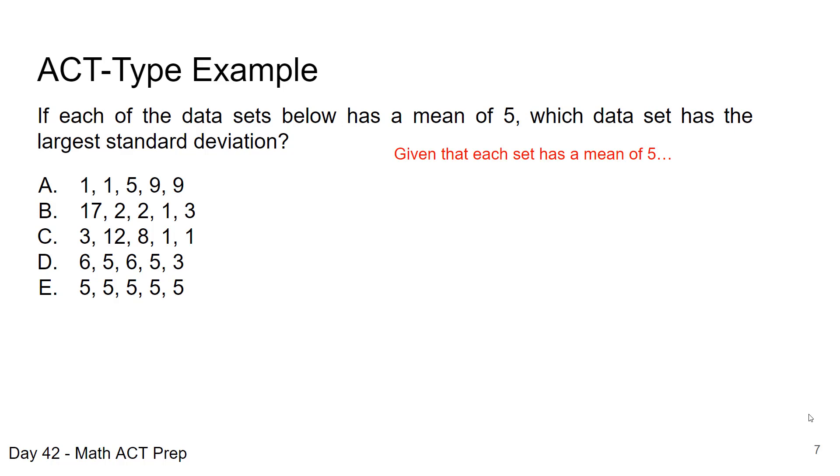First, when I'm glancing through the answer choices, I notice that choice E has values of 5 for each entry into the data set. That set is going to have a standard deviation of 0. Every value is equal to the mean.